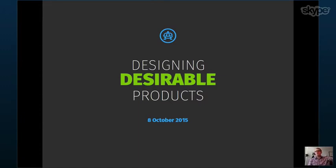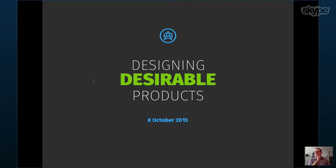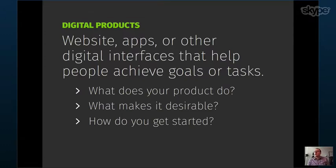Aaron calls the talk 'Designing Desirable Products' and says they will discuss what desirability means. First, he defines digital products as things produced for digital consumption — websites, software applications, other digital interfaces such as kiosks or airport touchscreens — that help people achieve goals or tasks.